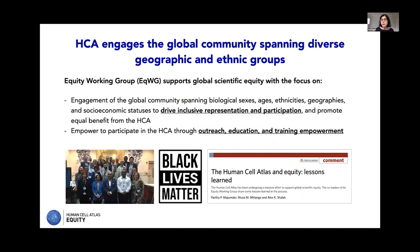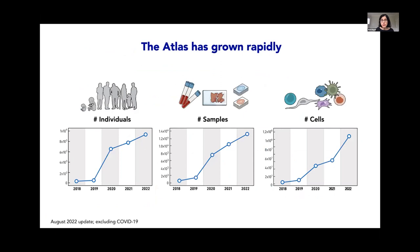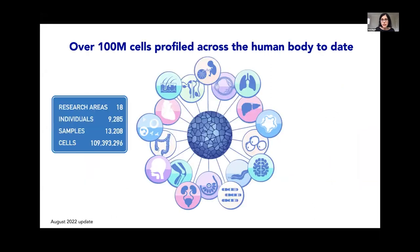HCA is engaged in the need for an atlas to be global, equitable, and fair — both in the data reflecting human diversity and in the scientists who build it. Data collection has skyrocketed, with a big inflection point between 2019 and 2020. There are now samples from many thousands of individuals, tens of millions of cells, and by last count over 110 million cells across 18 different organs and systems from almost 10,000 individuals, plus more than 12 million cells from COVID-19 patients.